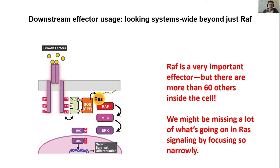Another interesting area, especially when trying to understand why some cells behave differently from others, comes in terms of downstream effector usage — looking systems-wide instead of just at RAF. For example, we went through the pathway in great detail: growth factor leads to activation of RAF, and RAF is absolutely a very important effector protein. But there are more than 60 other different effectors that could be present inside the cell at different amounts and levels.